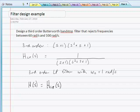...where s equals omega c times s times omega 2 minus omega 1 over s squared plus omega 1 times omega 2.